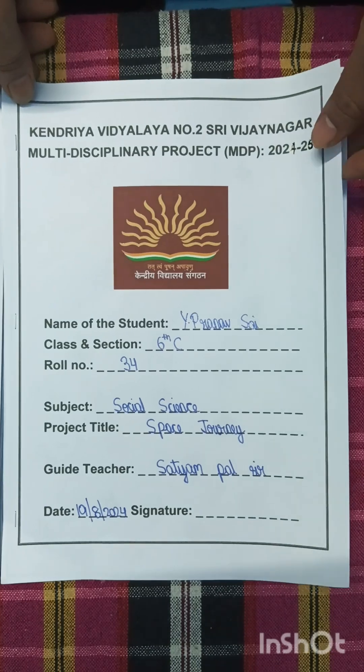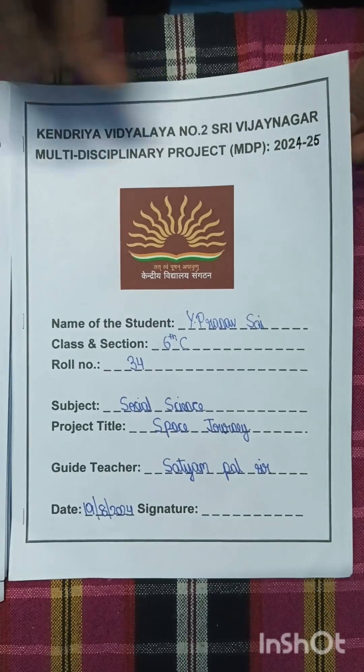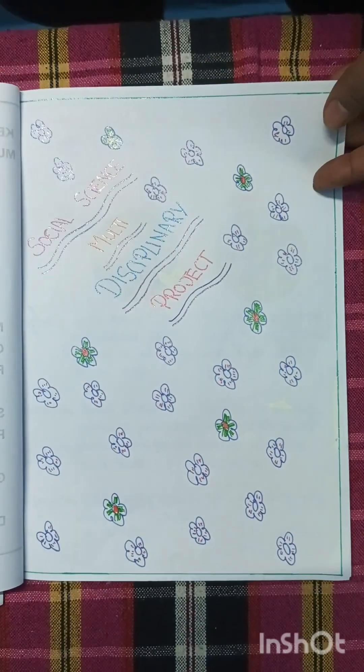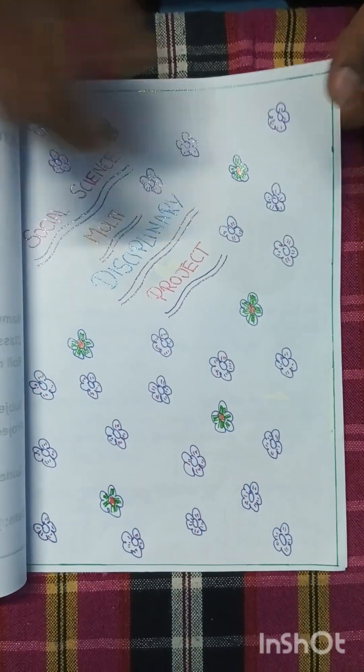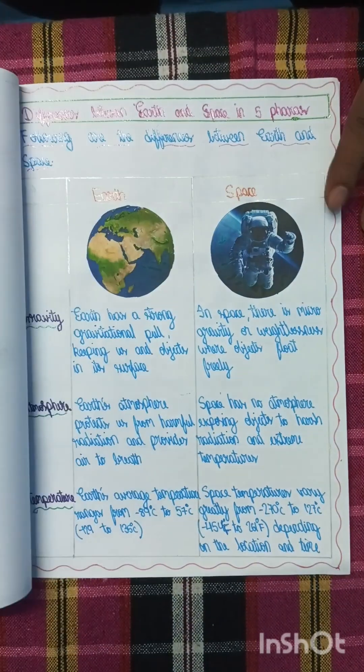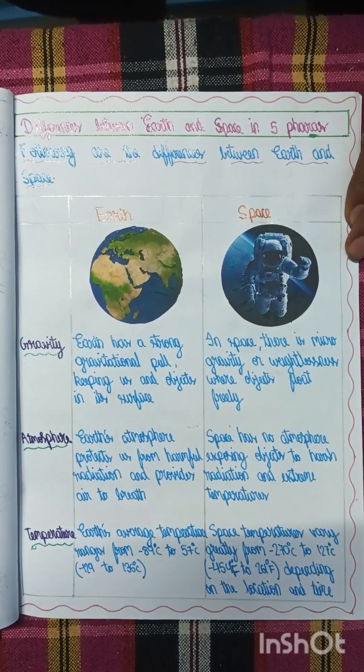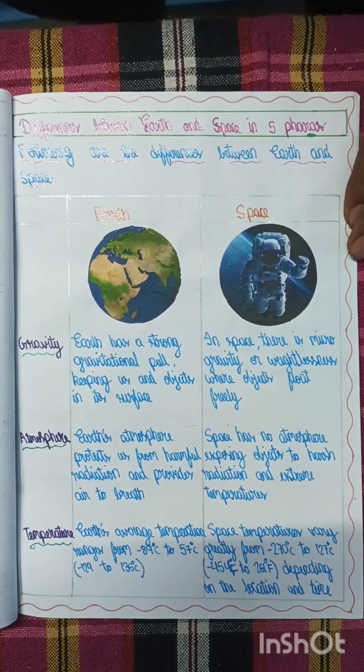This is my Social Science MDP project. Project title: Space Journey. My guide teacher for Social Science is Satyam Palsar.